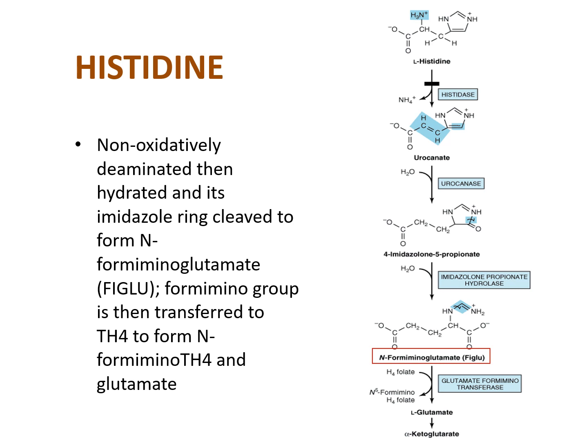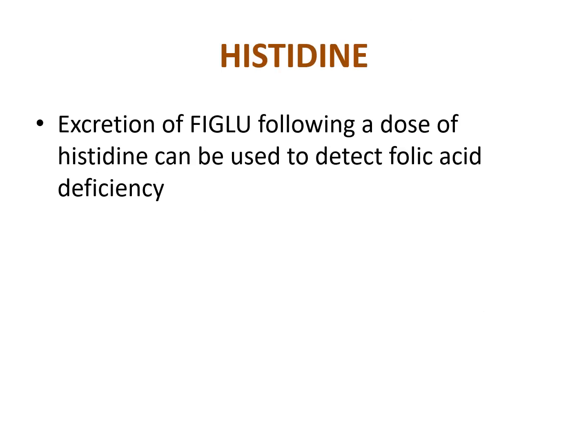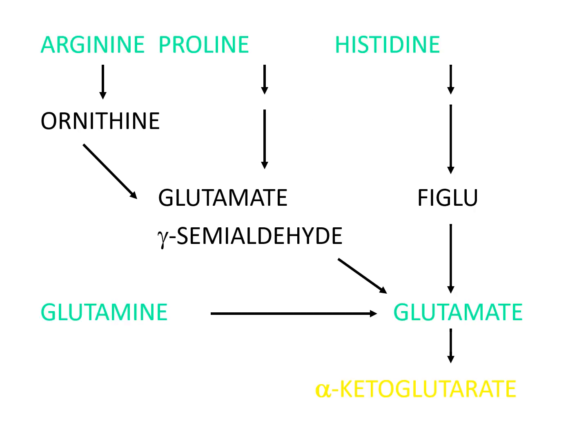Histidine is non-oxidatively deaminated, then hydrated, and its imidazole ring is cleaved to form N-formiminoglutamate (FIGLU). The formimino group is transferred to THF to form N-formimino-THF and glutamate. The excretion of FIGLU following a dose of histidine can be used to detect folic acid deficiency. Arginine, proline, histidine, and glutamine all form glutamate through intermediates such as ornithine, glutamate semi-aldehyde, and FIGLU, eventually metabolized to alpha-ketoglutarate.